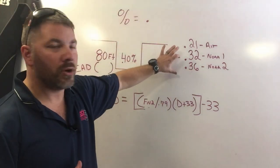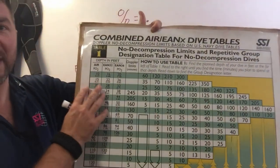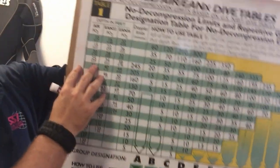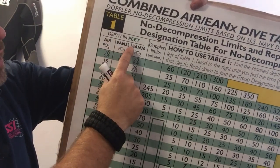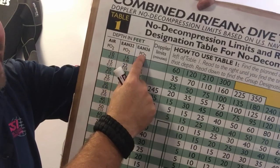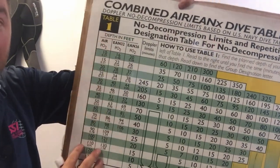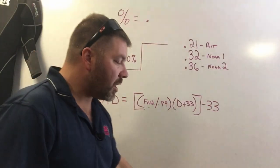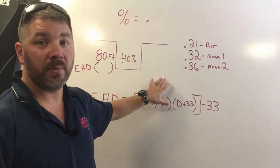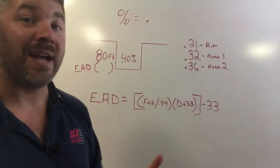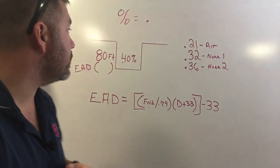Now what do I mean by a standard NOAA 1 and NOAA 2? Most training agencies, and for the purpose of the video I'm going to be using SSI dive tables, will have three sets of dive tables: an air blend, a 32% blend, and a 36% blend. SSI has it all on the same chart, but if you're not using 32 or 36% or even 21%, you're going to have to be able to do this equation to convert it back so you know what your maximum bottom time is for any given depth and for any given mixture.